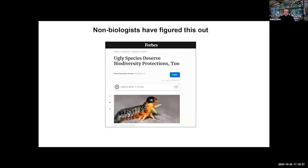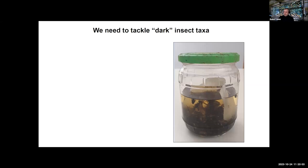Economists have pointed out that ugly species deserve biodiversity protection too. When we talk about dark taxa, we often talk about things that are only pretty if you zoom in on morphological details. But most of us tend not to look at dark taxa because they are too small. When you do biodiversity sampling for arthropods, you end up with a mass sample containing thousands of specimens, often from five or six hundred species.